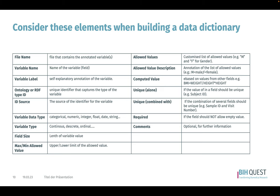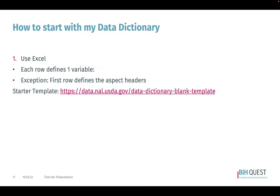When you start building your data dictionaries, here's a list of elements to consider as a starting point, beginning with the file name, the variable name, label, and so on. I recommend using Excel for this. The first row defines the variables, with each subsequent row defining a variable, and the aspect headers are represented in the first row. There is also a link to a starter template for a data dictionary.